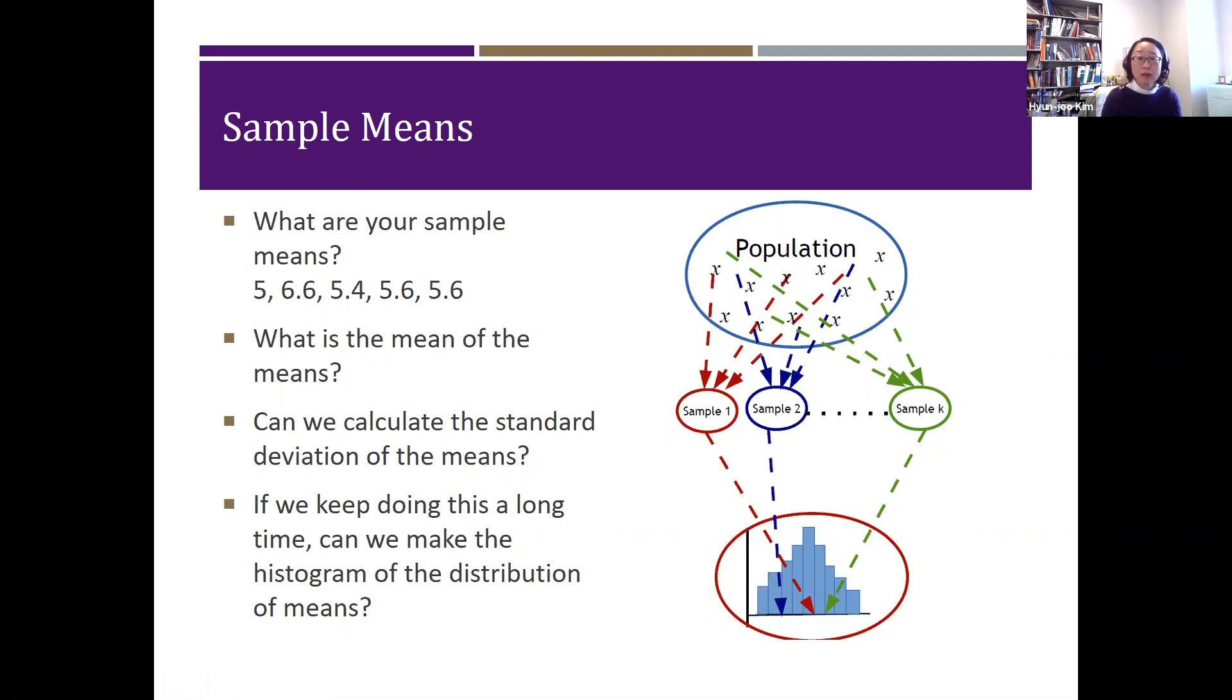And once more, sampling distribution is the distribution that is caused by sampling. For this particular section, we will be focusing on sampling distribution of X-bar, or how the X-bars are distributed by sampling. So what's the center of the X-bar? What's the spread of X-bar? And what's the shape of the distribution of X-bar?